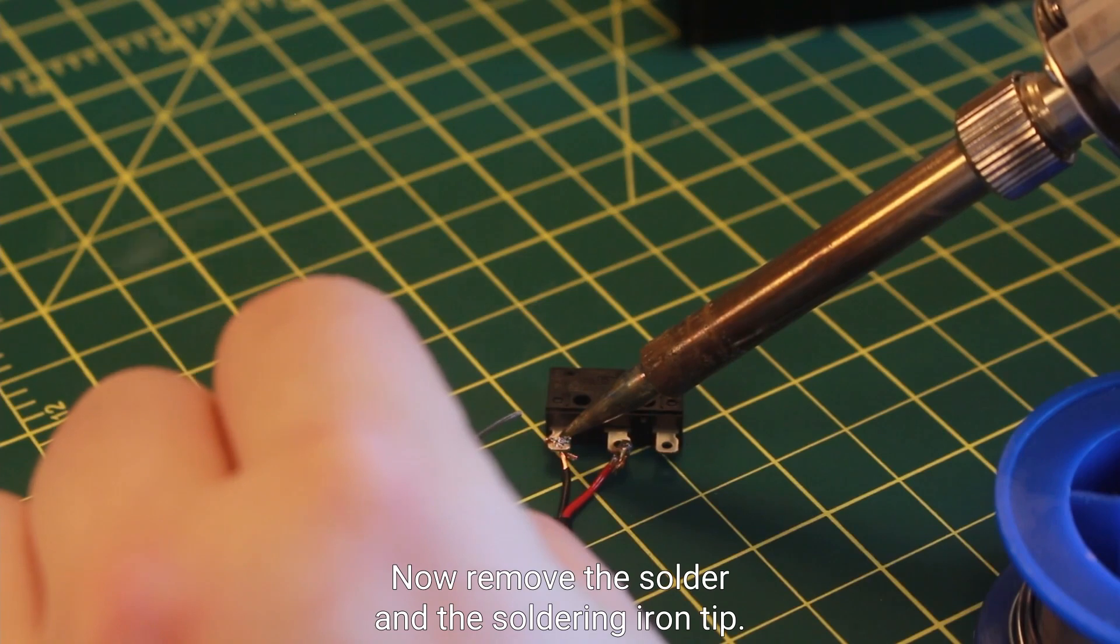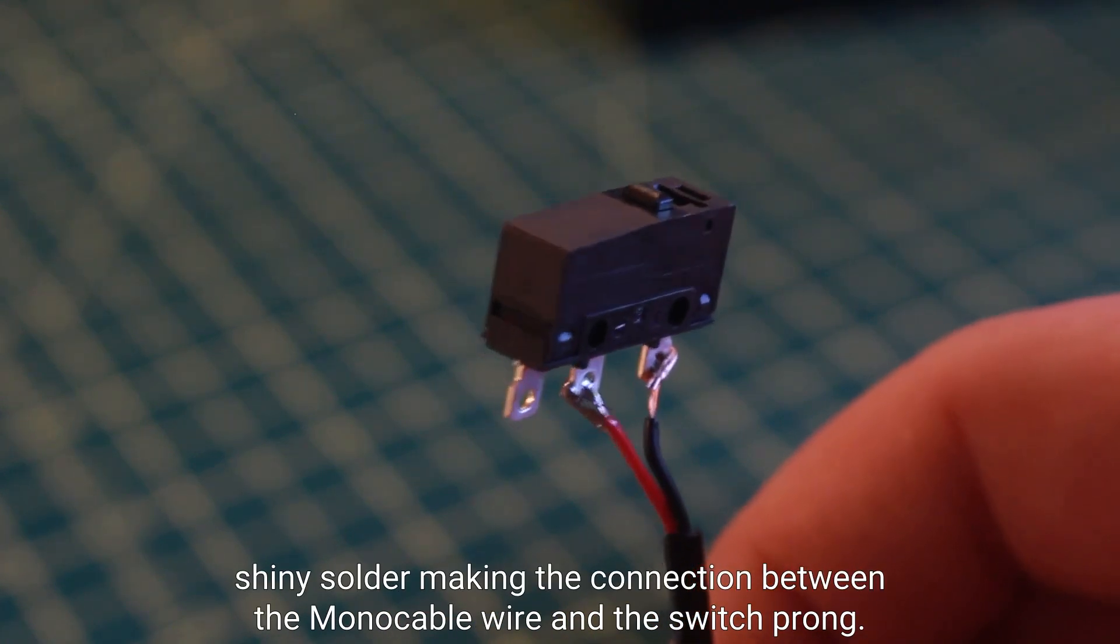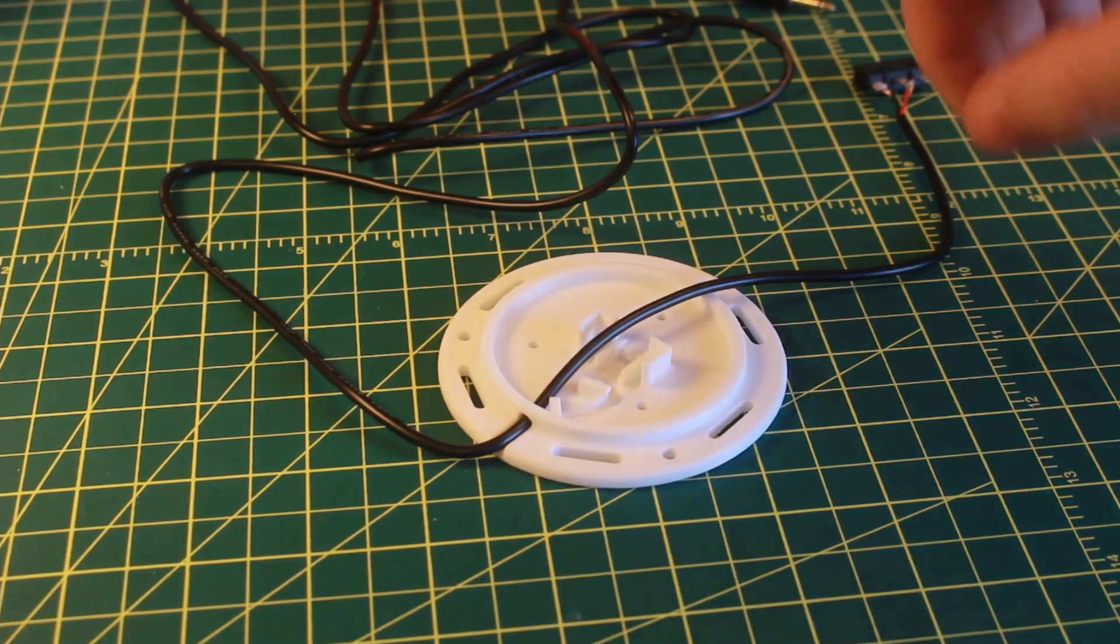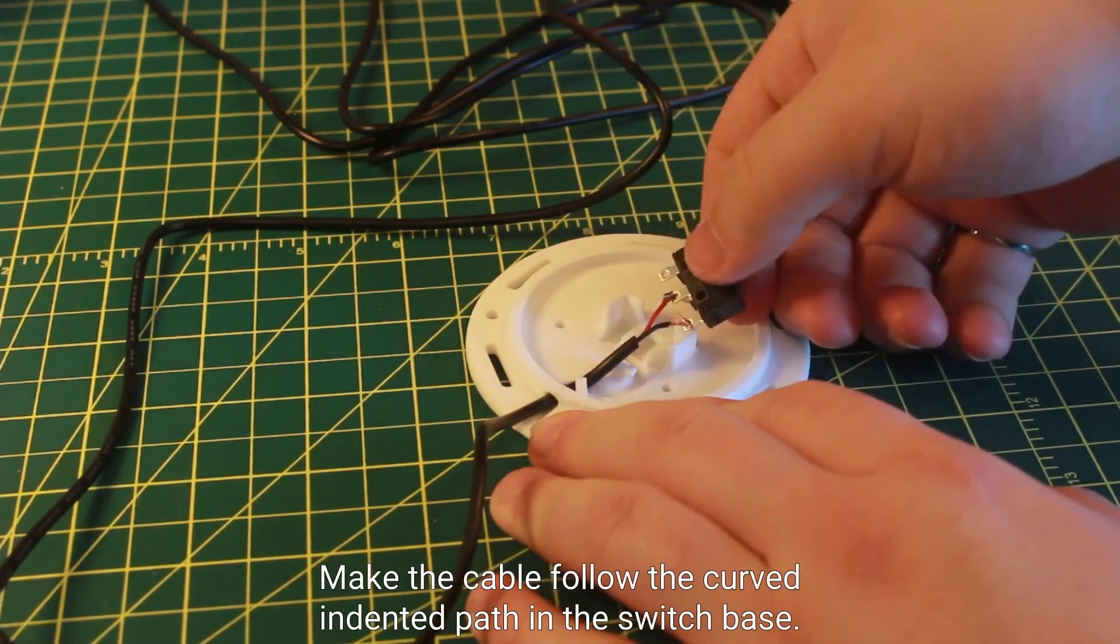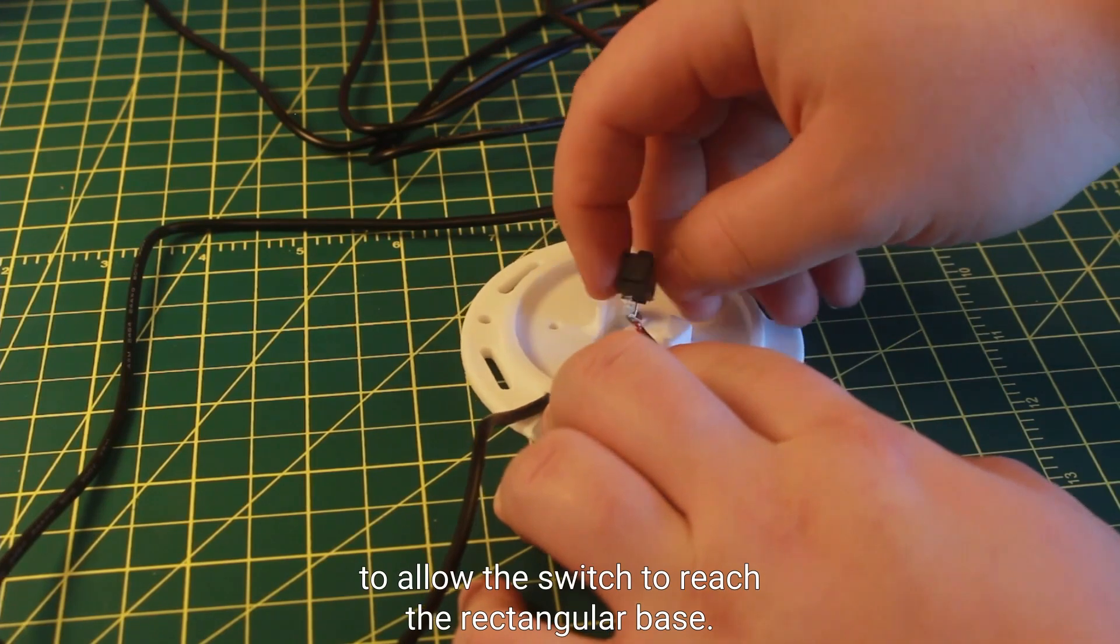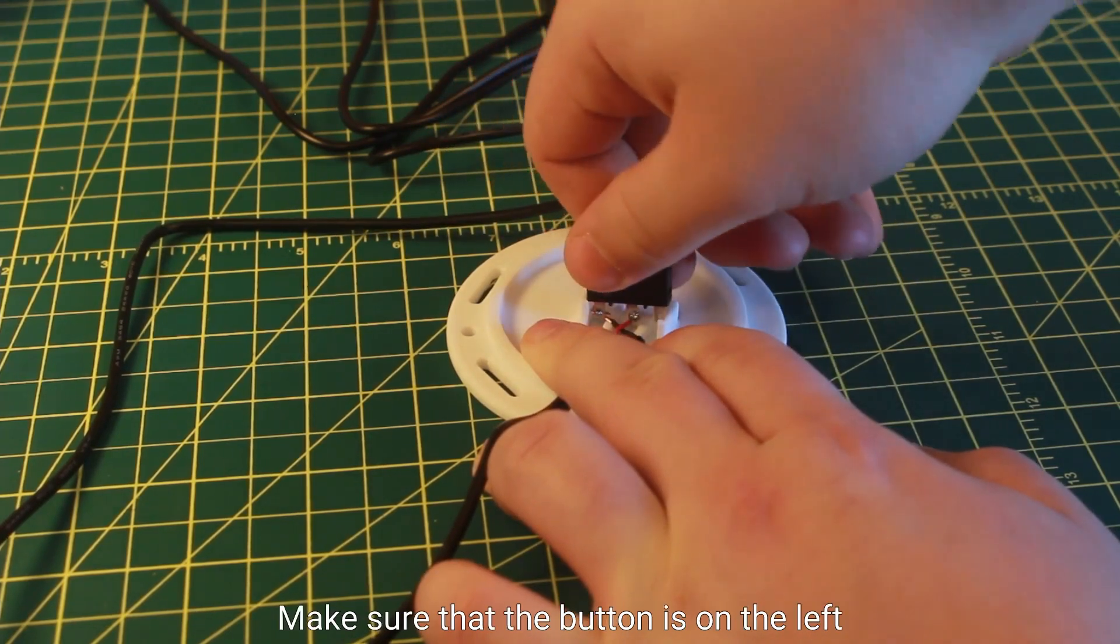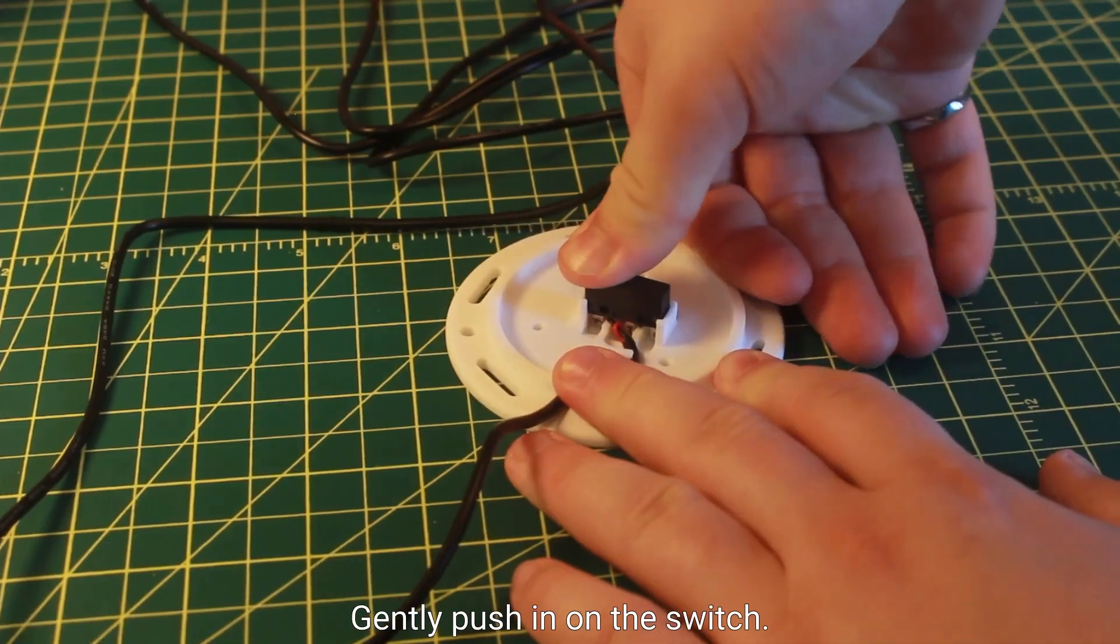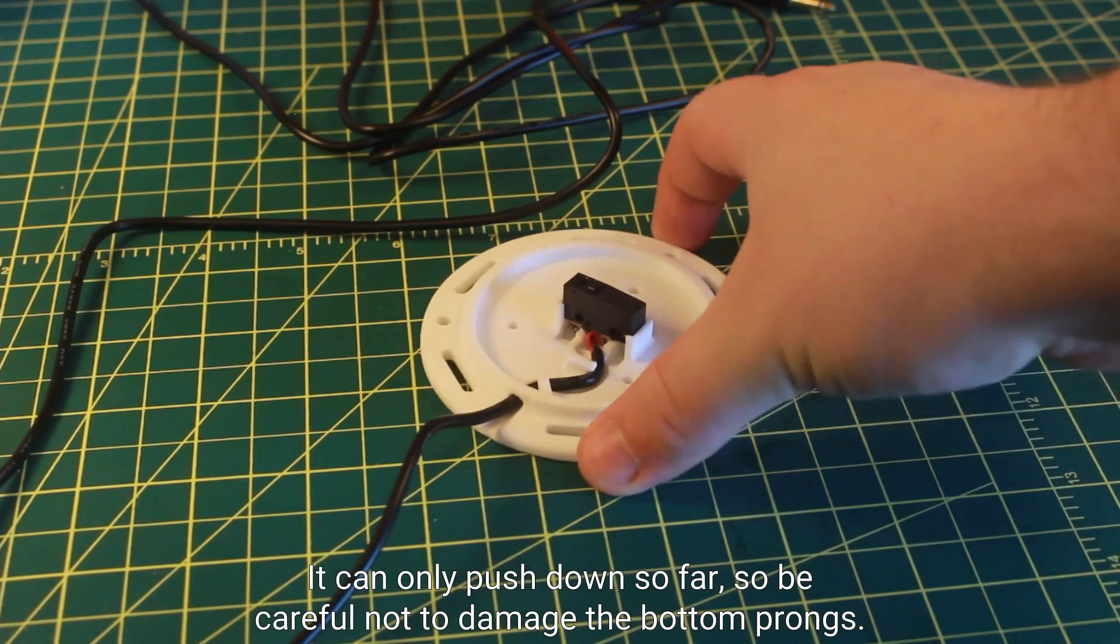Now remove the solder and the soldering iron tip. When completed you should see hardened shiny solder making the connection between the mono cable wire and the switch prong. We can now take the soldered switch and cable and feed it back through the hole of the switch base. Make the cable follow the curved indented path in the switch base. Do this until there is just enough cable to allow the switch to reach the rectangular base. Line up the switch with the rectangular slots pointed down. Make sure that the button is on the left side of the mono cable hole in the switch base. This can be seen here. Gently push in on the switch. The switch will not be flush with the rectangular piece. It can only push down so far, so be careful not to damage the bottom prongs.